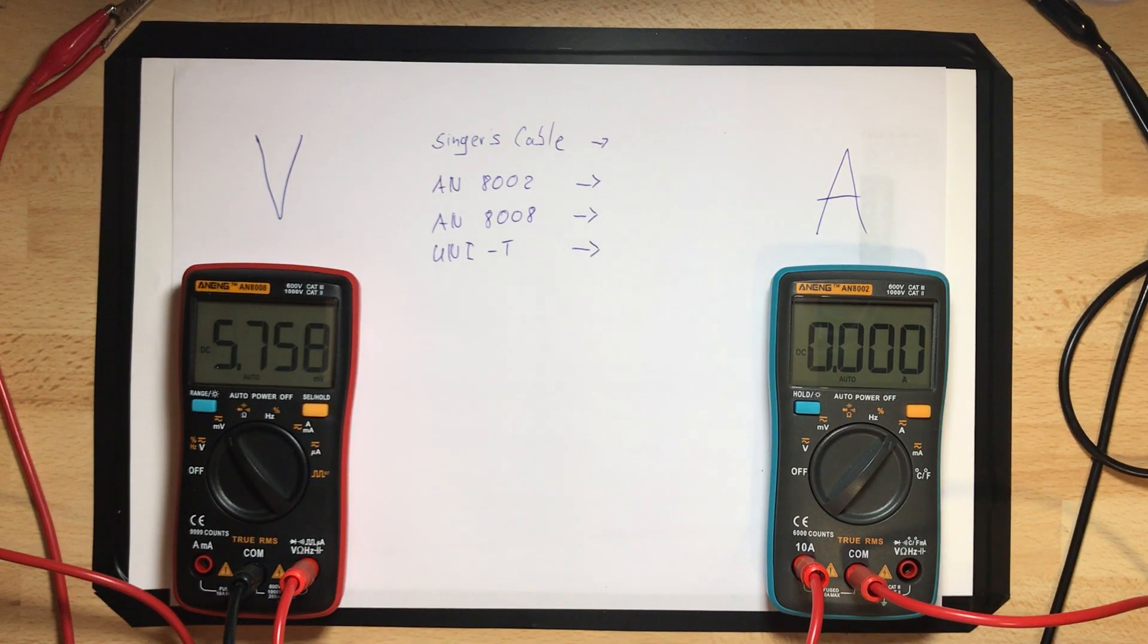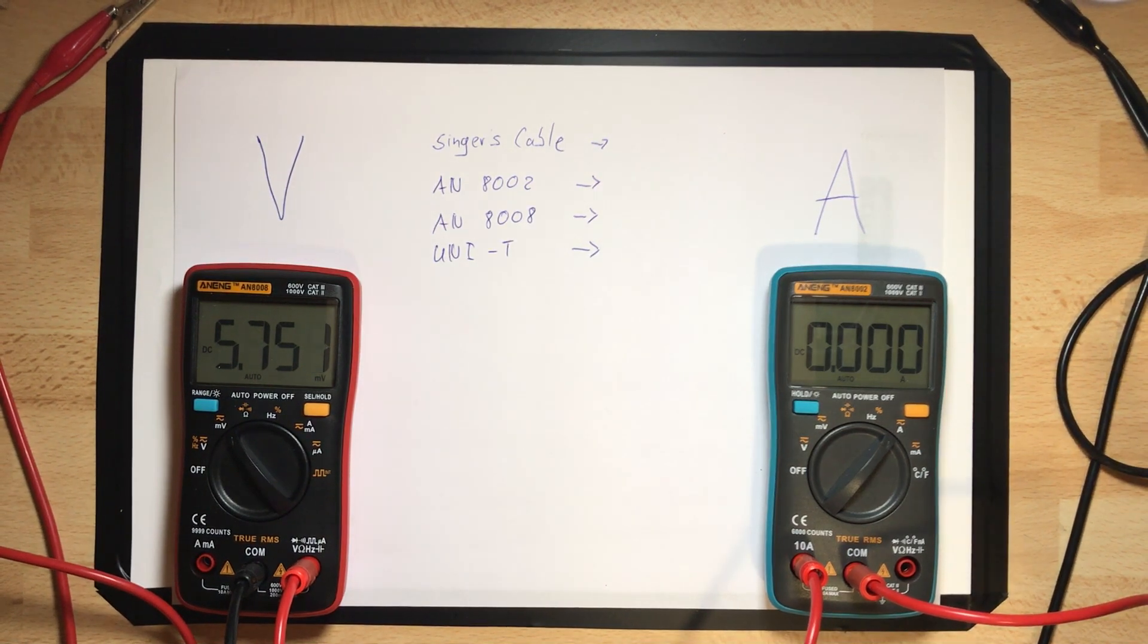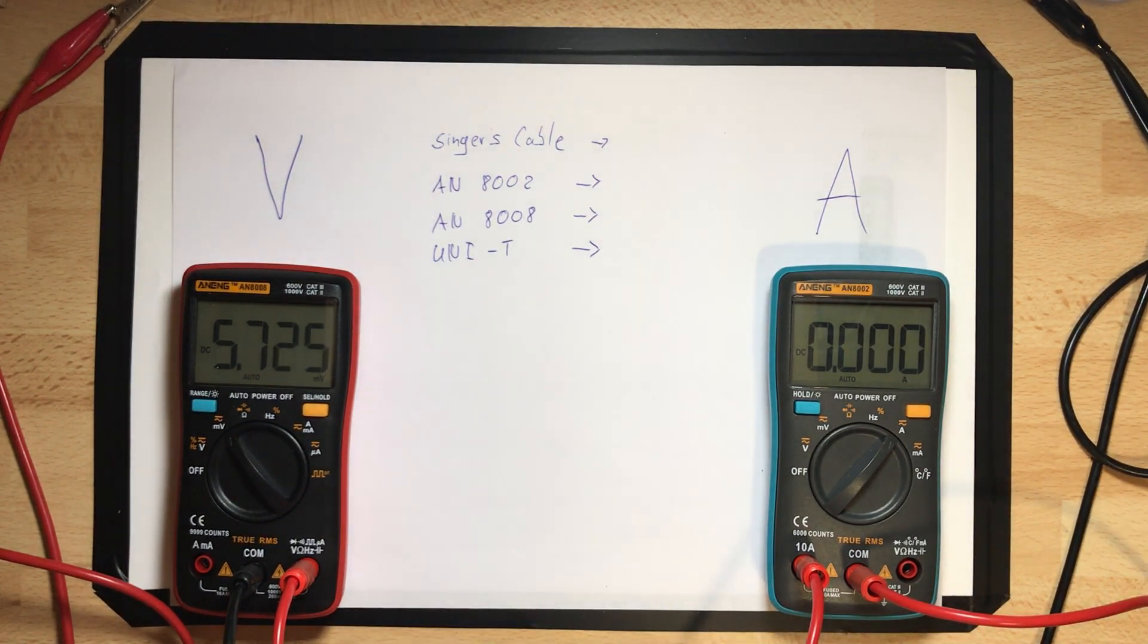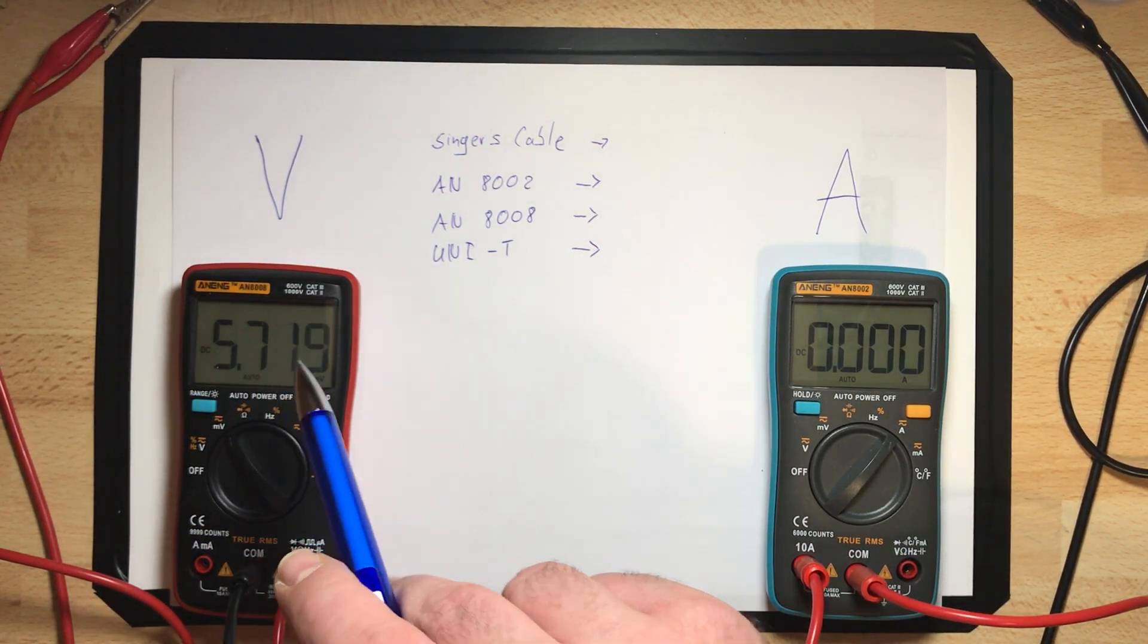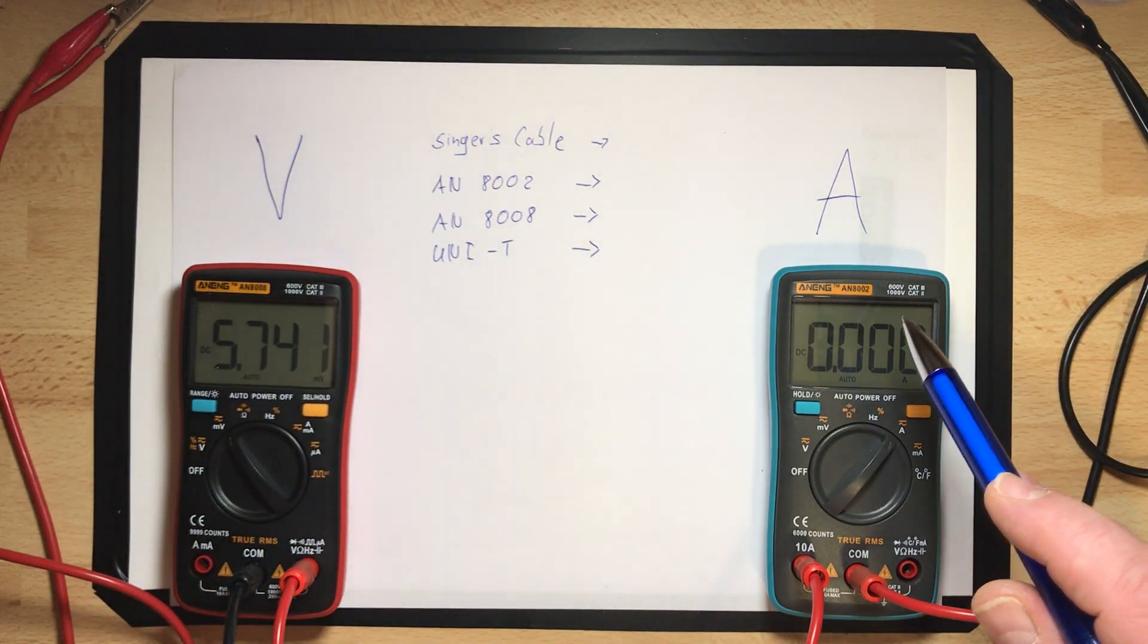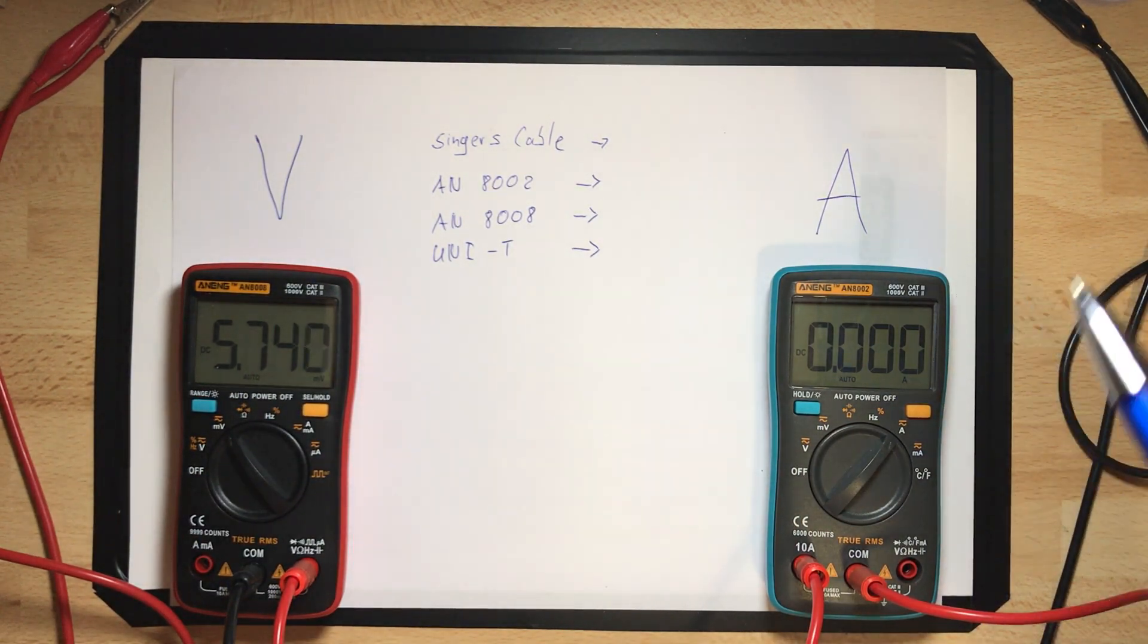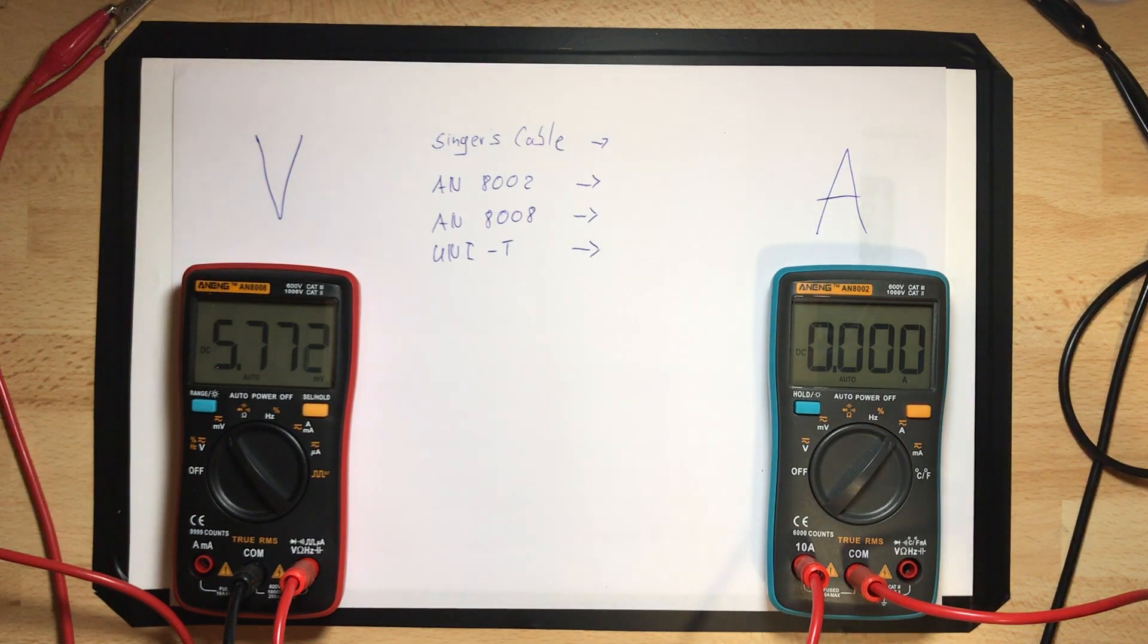Good evening and welcome again. As promised in my last video with the Aneng 8008, I will show you how to check the quality of meter probes, the copper quality of the meter probes without cutting them. I'm using the AN8008 to measure voltage and the 8002 for measuring amps. I'm using my bench power supply set to 5 volts and 4 amps.